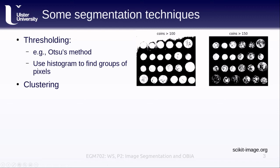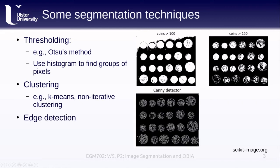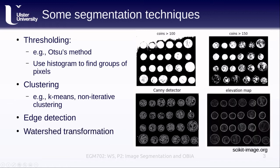We can also use techniques called clustering, where we let the computer use a number of different algorithms to help identify clusters of pixels. For example, we've seen k-means clustering as one example. Non-iterative clustering is another example that we'll look at in the practical for this week. We can also use edge detection, where we find the edges of objects and then use that to help segment the image based on these boundaries. We can also use something called a watershed transformation, where we use the brightness values in the image as if they were an elevation, and use techniques from hydrology to break up different parts of the image into different watersheds.